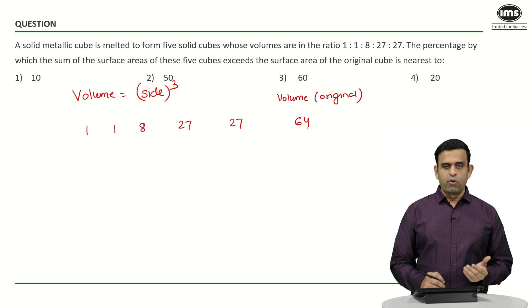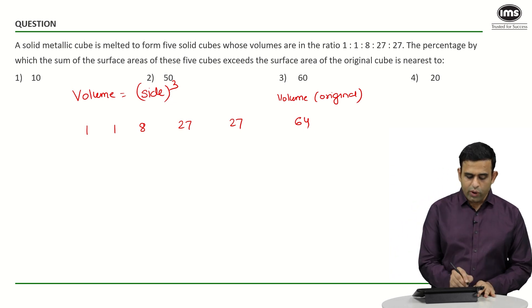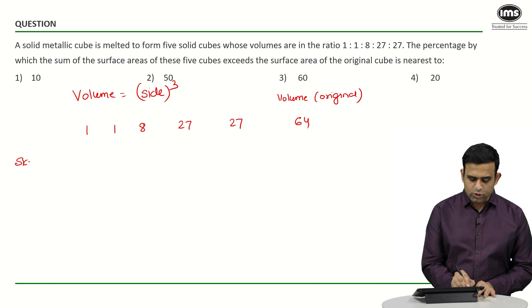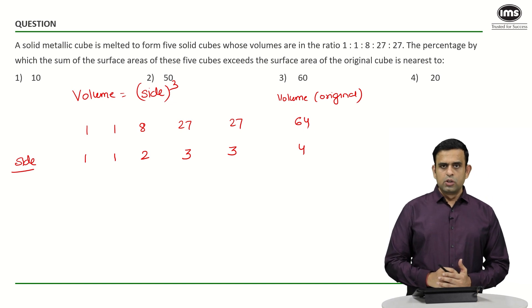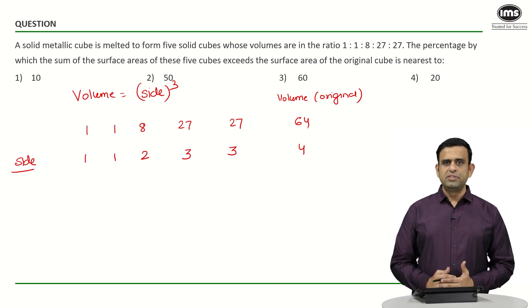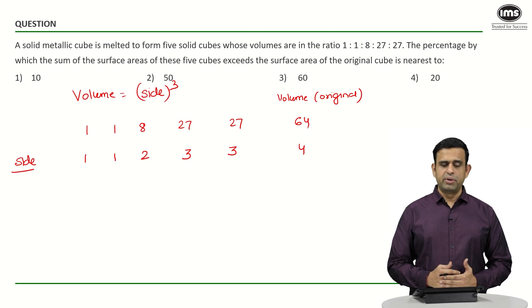Now if the volumes are 1, 1, 8, 27, 27, and 64, what about the sides? The sides are 1, 1, 2, 3, 3, and 4. So we got the sides of the five pieces and the bigger cube, which is 4.